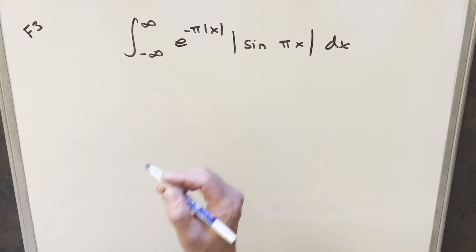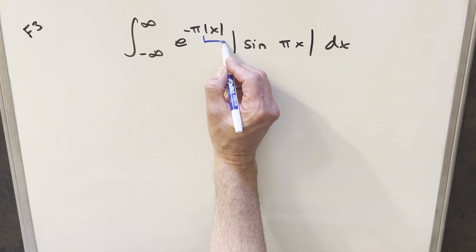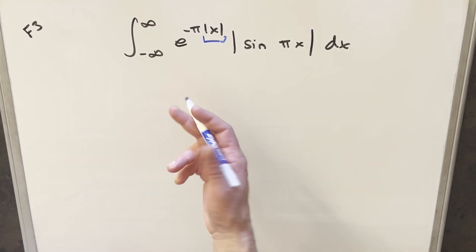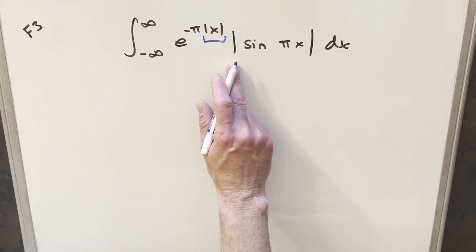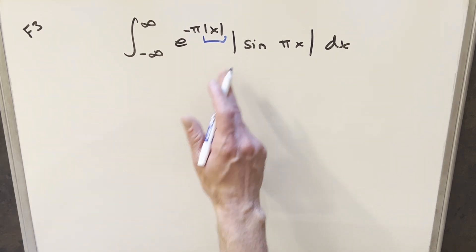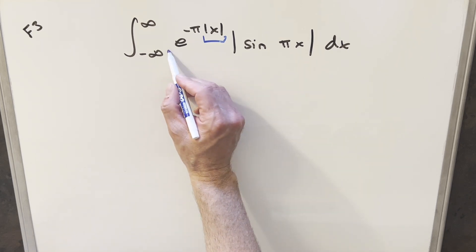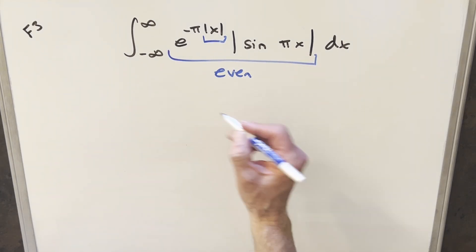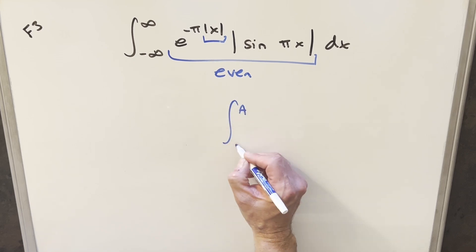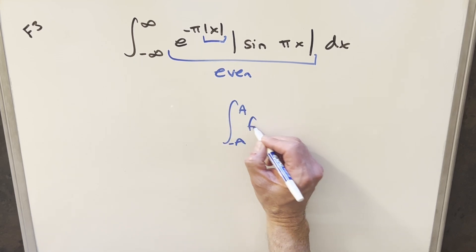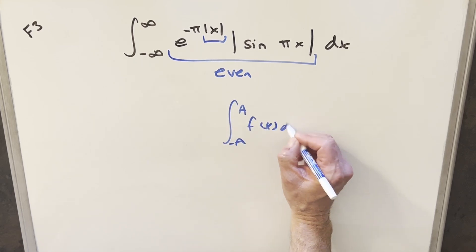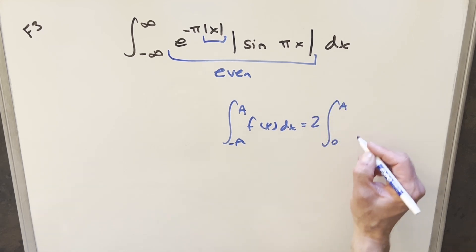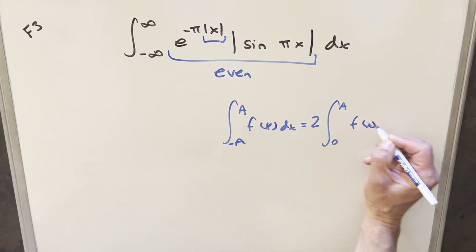We've got a lot of different things to deal with here. What I want to focus on first is just the absolute value — I want to get rid of it because we can't really integrate until we deal with it. This whole thing is actually an even function. So what if we use the principle of even functions: with symmetric bounds on an even function f(x), you can write this as two times the integral from zero to A of the same function.